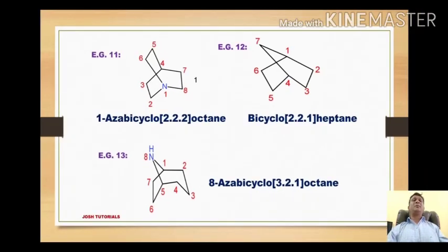These are the classical examples explaining the nomenclature of bicyclic ring systems. Thanks for watching — please like, share, and subscribe.